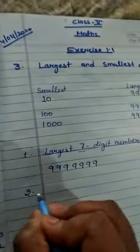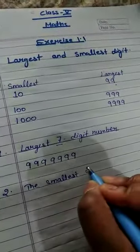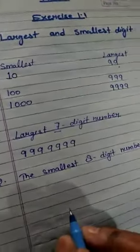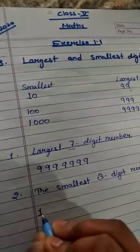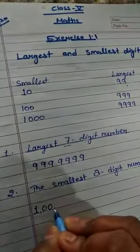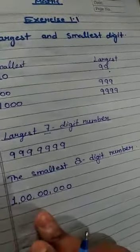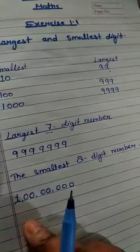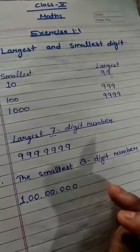Then question B: the smallest 8-digit number. Now we have to find where 7 digits are finished and 8 digits start. So 8-digit starts with 1 and 7 zeros: 1, 0, 0, 0, 0, 0, 0, 0 — that is the 8-digit smallest number. And the 8-digit largest number is 8 times 9: 99,999,999.